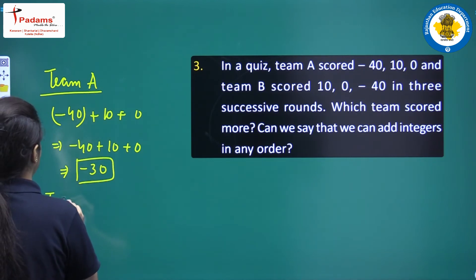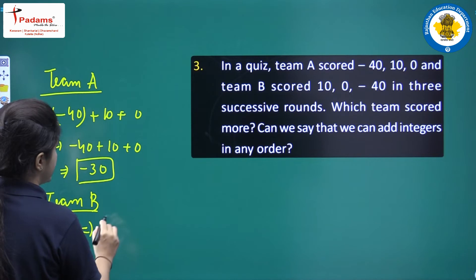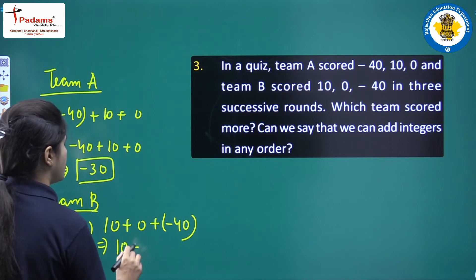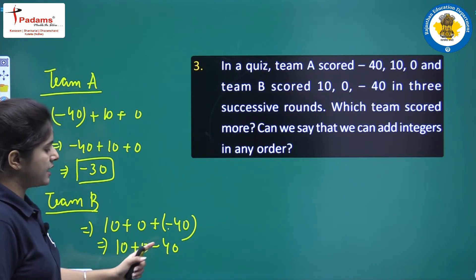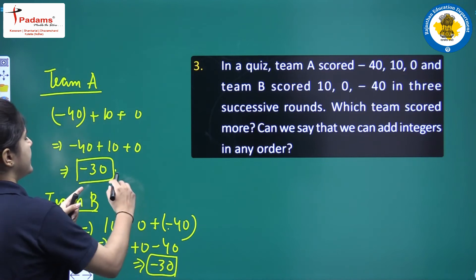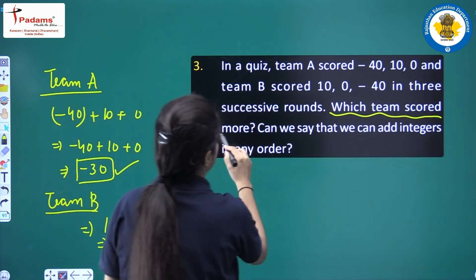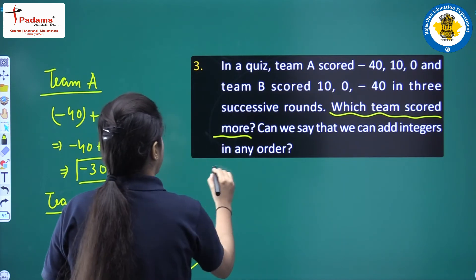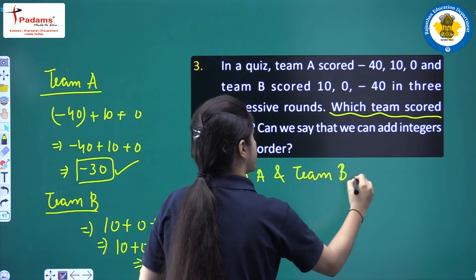Now team B's total: 10 plus 0 plus minus 40. 10 plus 0 equals 10, and 10 minus 40 equals minus 30. We can clearly see that the scores of team A and team B are the same, so both teams scored equally.